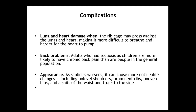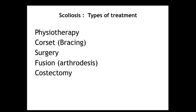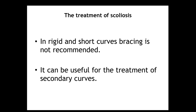Complications of scoliosis include lung and heart damage, back problems, and cosmetic appearance concerns. Treatment options include physiotherapy, corset or bracing, surgery, spinal fusion (arthrodesis), or costectomy. For rigid and short curves, bracing may not be recommended, but bracing can be useful for treating secondary curves.